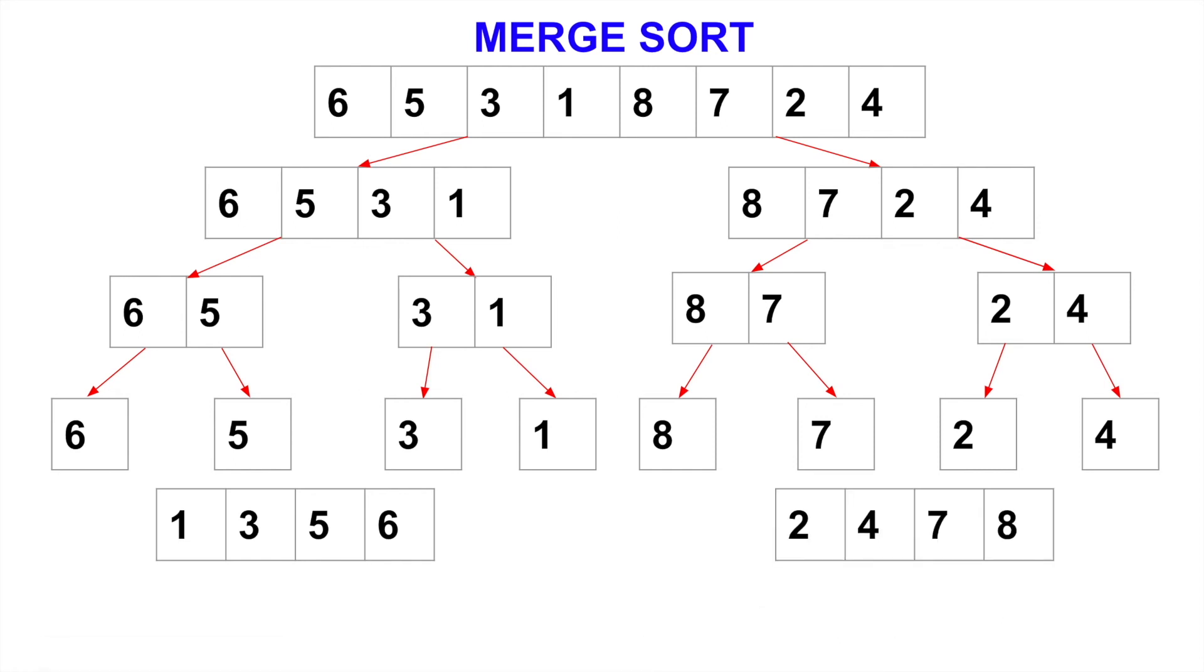Now we have the second half sorted already, 2, 4, 7, and 8. And also we have the first half sorted, 1, 3, 5, 6. Again, so now we have the two halves of this given original input array sorted. What are we going to do? We just merge these two sorted subarrays into one final output. The beauty of this is that these two subarrays are already sorted.